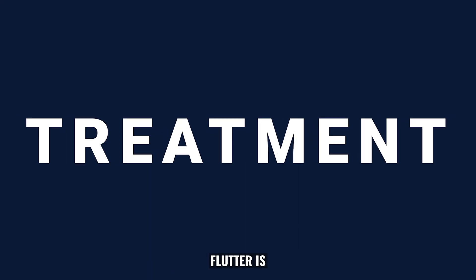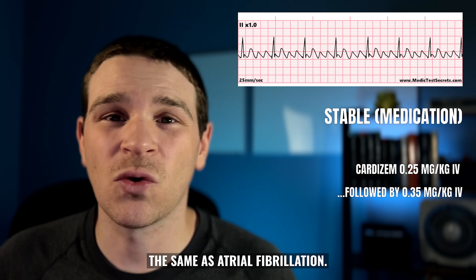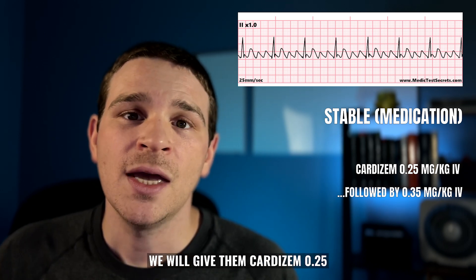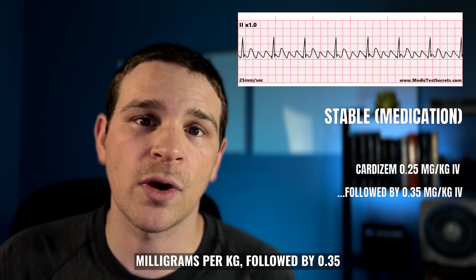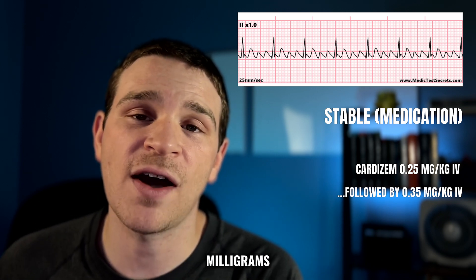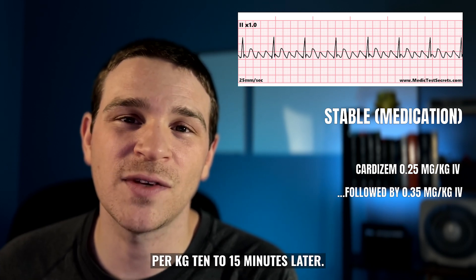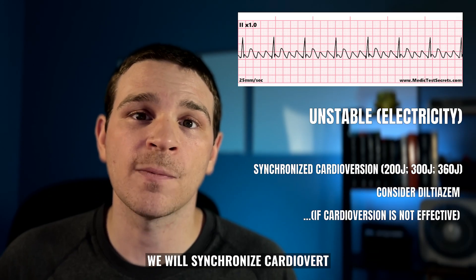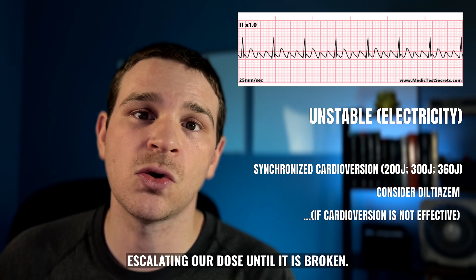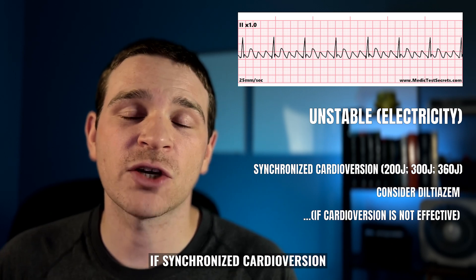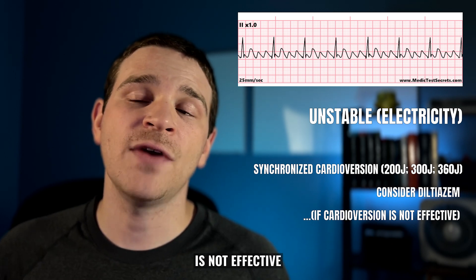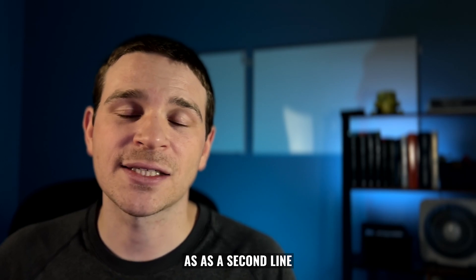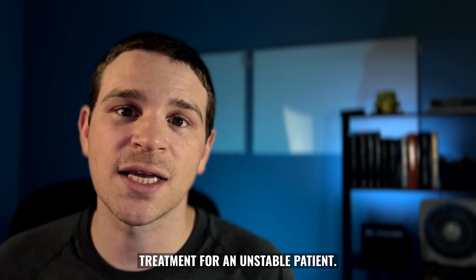Treatment for atrial flutter is essentially the same as atrial fibrillation. If the patient is stable, give Cardizem 0.25 milligrams per kilogram, followed by 0.35 milligrams per kilogram 10 to 15 minutes later. If they are unstable, synchronize cardiovert, escalating the dose until the rhythm is broken. If synchronized cardioversion is not effective, consider diltiazem or Cardizem as a second-line treatment for the unstable patient.